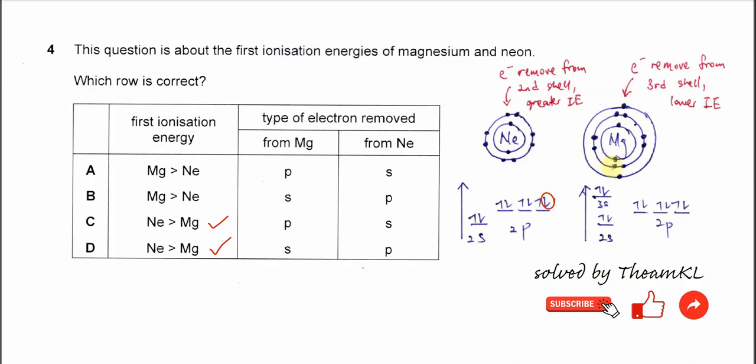And for magnesium, the first electron is removed from the s orbital, from 3s. One of these electrons is removed.